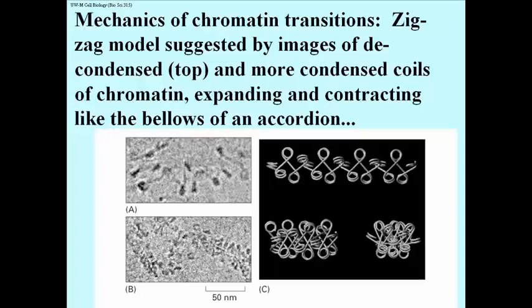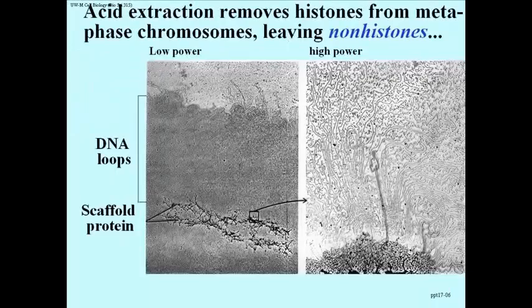And so it's as if the solenoid could expand and contract much like the pleats or the bellows in an accordion. This is actually an extract of chromatin showing you the loops and some portion of the scaffold proteins that are at the center of these loops — those are DNA loops, the looped domains.